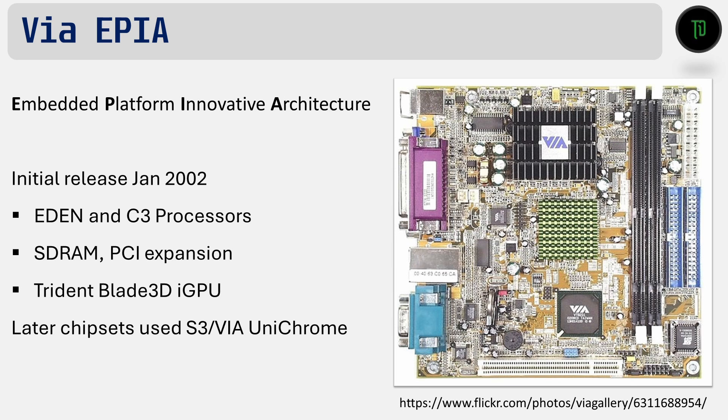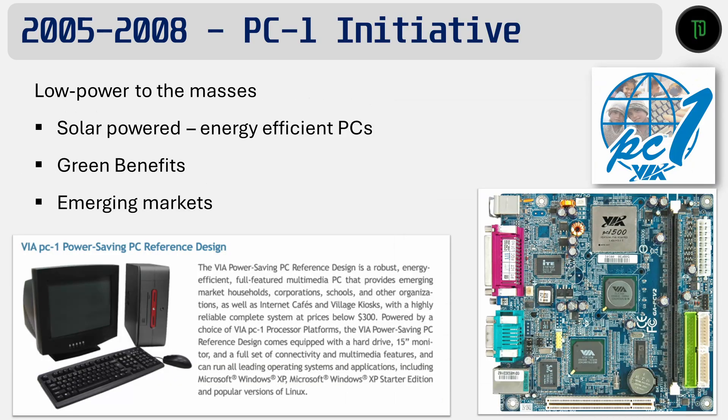VIA saw the Mini-ITX platform as a way to bring accessible, low-powered compute to both developed and emerging countries. The PC One initiative aimed to bridge the digital divide and get devices to the next billion people. One concept was to get a complete PC under US$300 and distribute these to countries and areas where the general population couldn't afford mainstream offerings. VIA had many initiatives at the time including focus on carbon reduction, solar power and setting up centres in remote communities to increase computer skills and literacy. The Gigabyte GA-PCV2 is an example of one of those Mini-ITX boards from the PC One initiative.